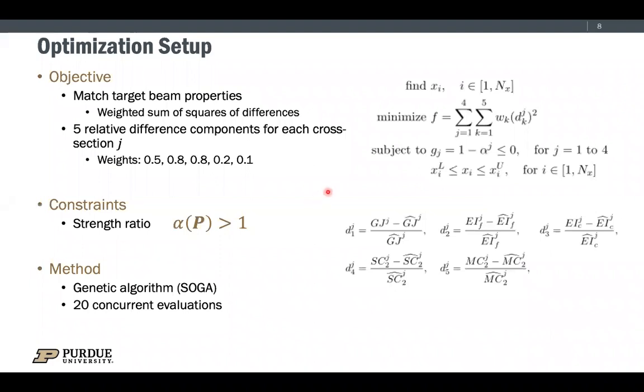Here shows the optimization setup. The objective is to find a set of design variables to match the five beam properties. The properties are shown on the right. We use the weighted sum method to form the objective functions and the weights of the corresponding terms are shown here. For the constraint, we require the strength ratio to be larger than one. We use the single objective genetic algorithm to carry out the optimization.